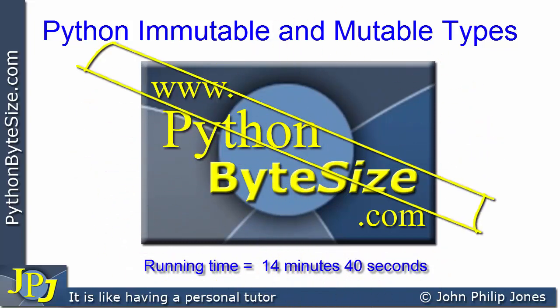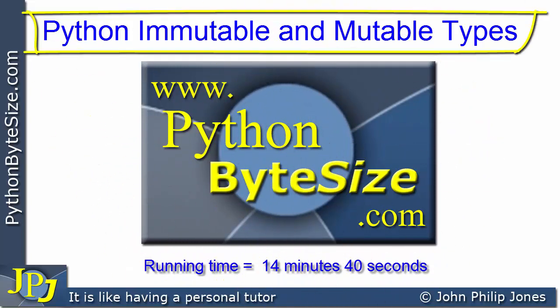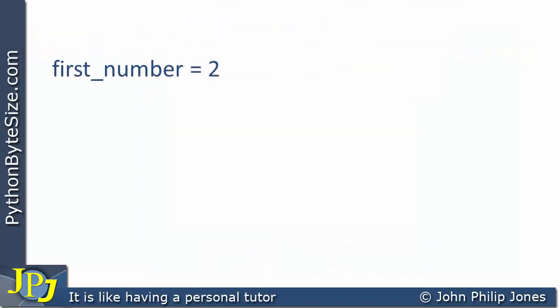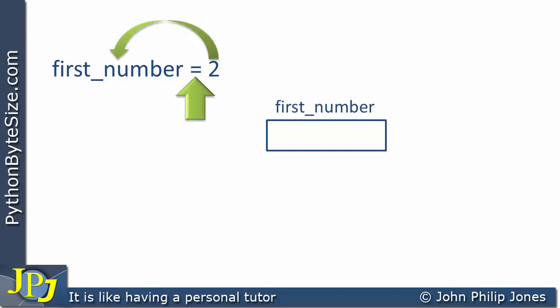In this video lesson we're going to have a look at immutable and mutable types in Python. Consider this program statement where first_number is assigned 2, and we can represent this diagrammatically. We have a box or an area of memory labeled first_number, and with the assignment statement, the 2 is assigned to that variable, which we can show diagrammatically as the 2 going into that variable.